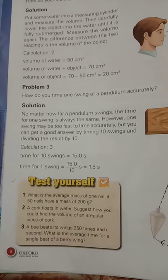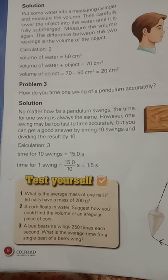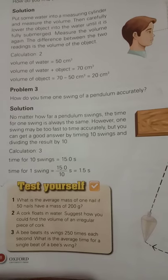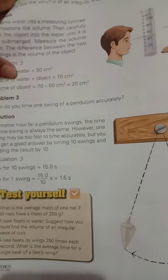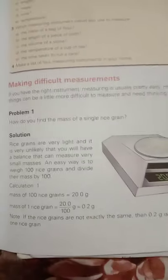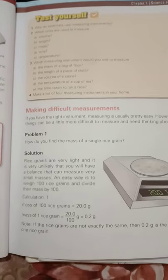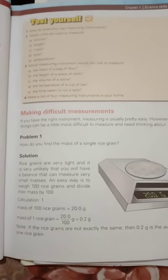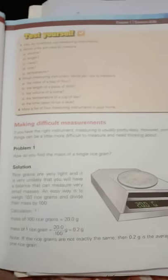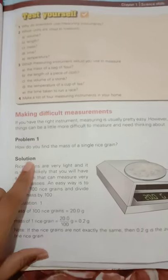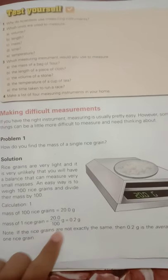Problem number 1: What is the average mass of one nail if 50 nails have a mass of 200 grams? اگر ہمارے پاس 50 nails ہیں اور ان کا mass 200 gram ہے تو ایک nail کا mass کتنا ہوگا؟ یہ problem number 1 ہے۔ جیسے single rice grain کا mass find کرنا بہت مشکل ہوتا ہے، تو ہم نے 100 rice grains لیے، electronic balance سے ان کا mass 20 gram find کیا، پھر 20 grams کو 100 سے divide کیا۔ یہی base یہاں بھی use ہوگی۔